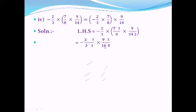Now check: 2 can cancel with 16 using table 2 (2×1=2, 2×8=16), and 3 and 9 are both divisible by table 3 (3×1=3, 3×3=9). The minus sign stays. So we get: minus × positive = minus, and 3×1=3, 8×1=8. The left-hand side answer is -3/8, which we label answer 1.